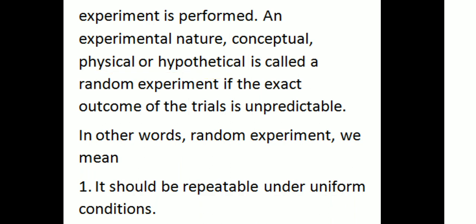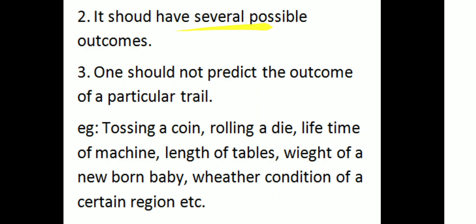An experiment — natural, conceptual, physical, or hypothetical — is called a random experiment if the exact outcome of the trial is unpredictable. In other words, a random experiment should be repeatable under uniform conditions, it should have several possible outcomes, and one should not be able to predict the outcome of a particular trial. Examples include tossing a coin, rolling a die, lifetime of a machine, length of a table, weight of a newborn baby, weather condition of a certain region, etc.